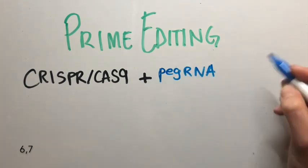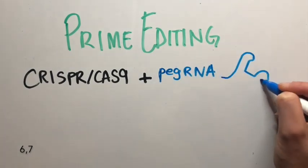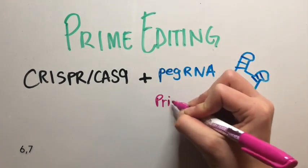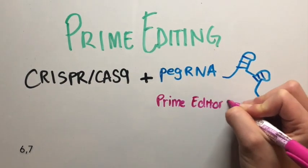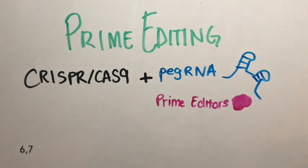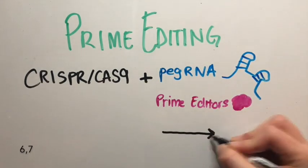It has taken what we know as CRISPR-Cas9 and added a few extra elements to it, including the Prime Editing Guide RNA, or PEG RNA, the Prime Editors, and the enzyme reverse transcriptase, which is implicated in the process of reverse transcription.